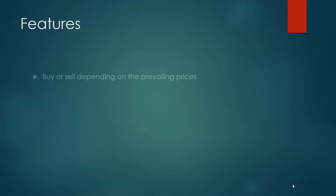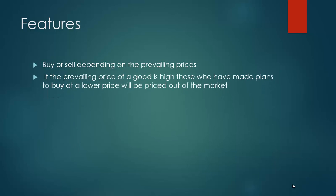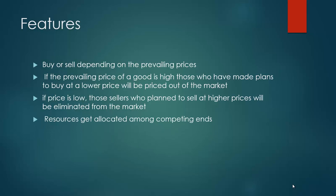The emphasis is on the word potential. Everyone comes to the market with his or her notion of how much to buy or sell depending on the prevailing prices. If the prevailing price of a good is high, those who have made plans to buy at a lower price will be priced out of the market. Similarly, if price is low, those sellers who plan to sell at higher prices will be eliminated from the market. Activities on a market would determine what the price will be, what quantities will be bought and sold, and who the buyers and sellers are.